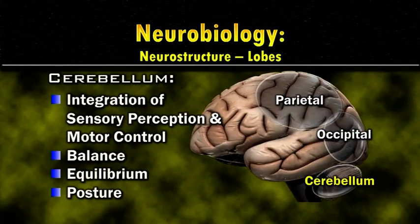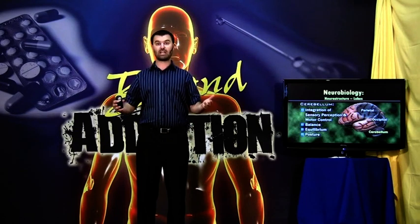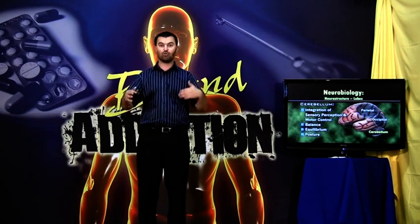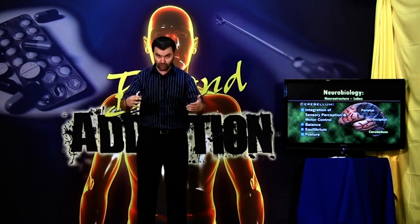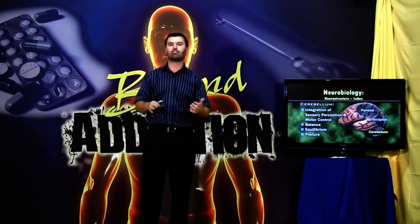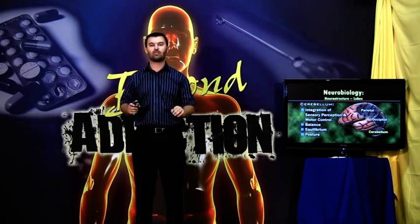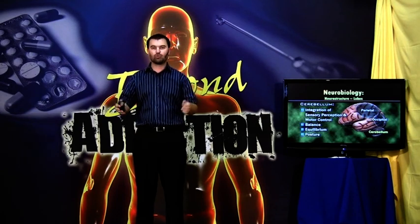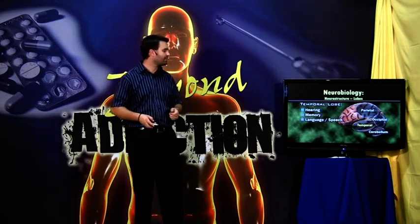Balance, equilibrium, and your posture are all handled by the cerebellum. You don't think about sitting up straight. Over a period of your lifetime you are forming a habit — at first it's conscious, and then eventually the cerebellum takes it over. It's sort of programmed into the cerebellum — the posture with which you sit, keeping your balance and all the rest of it.